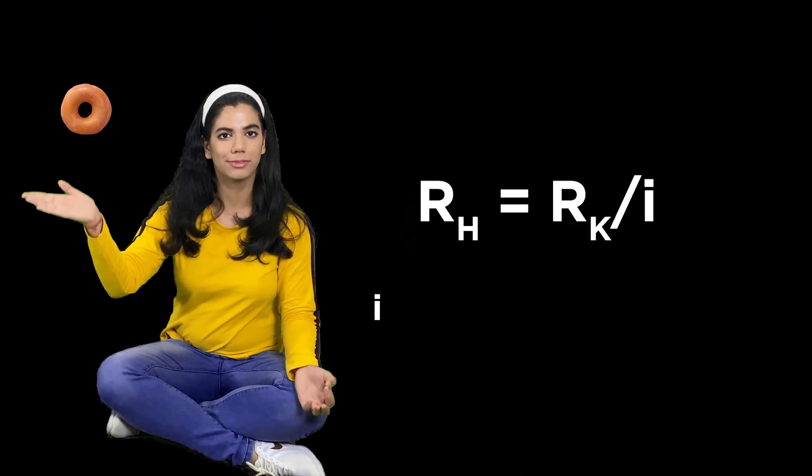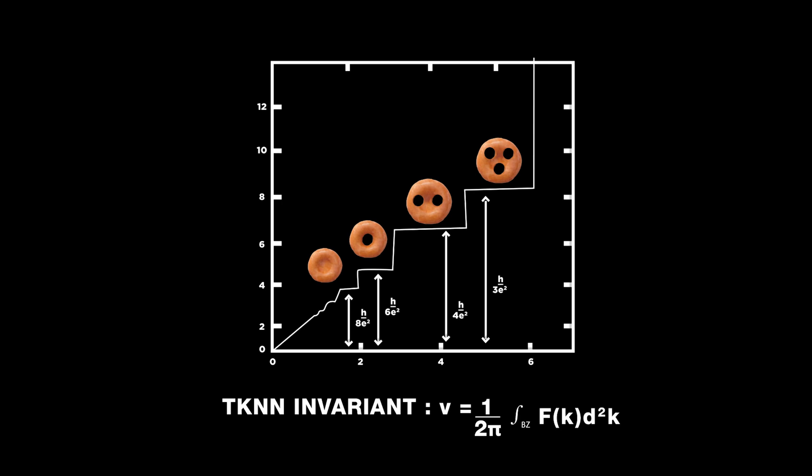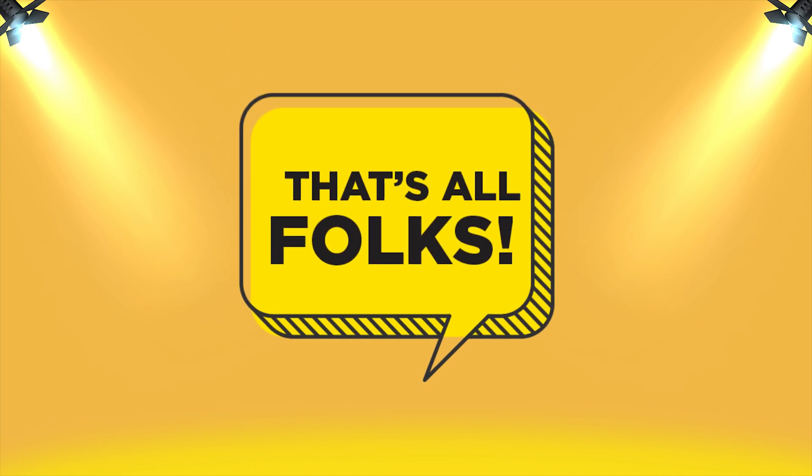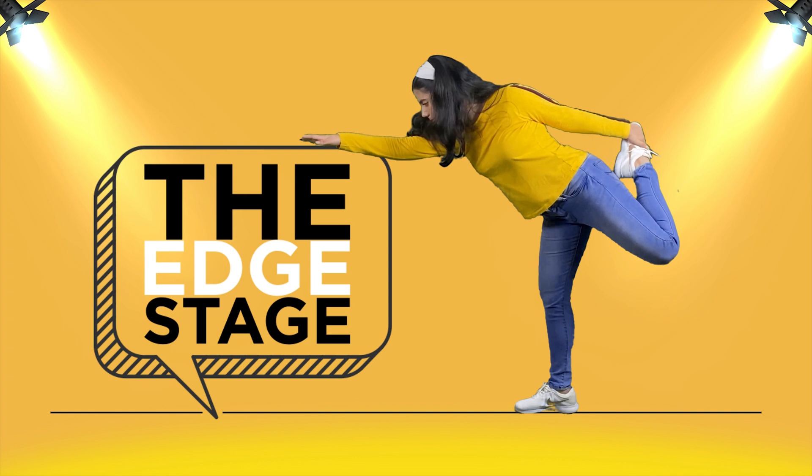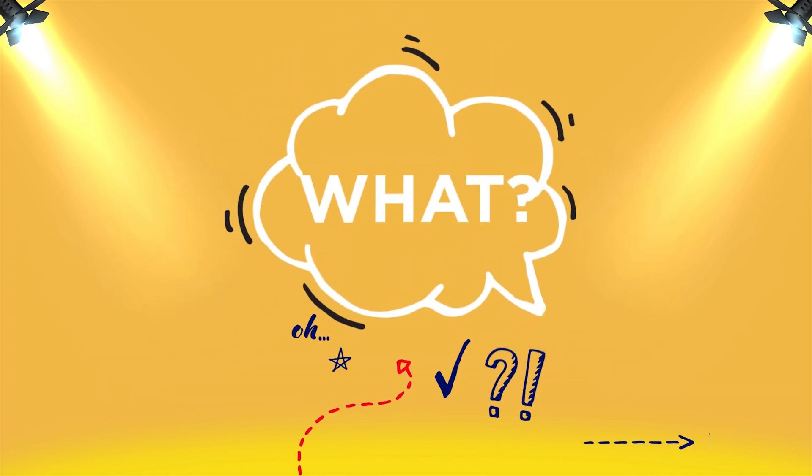An integer, like the number of holes in a donut. It was named the TKNN invariant. Thanks for watching! There's one more thing: the edge state. Something very odd happens to electrons in the quantum Hall effect.